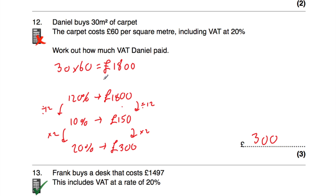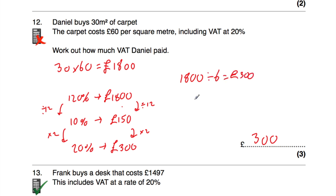There's a quick shortcut: the total paid represents 120%, and to find 20% (the VAT) you simply divide by 6 (since 120 ÷ 6 = 20). So £1,800 divided by 6 = £300. This works whenever the VAT rate is 20%.